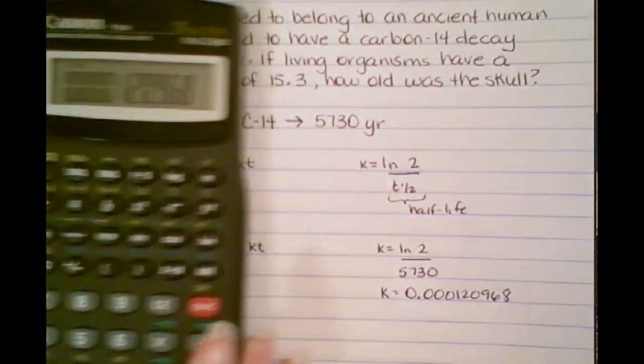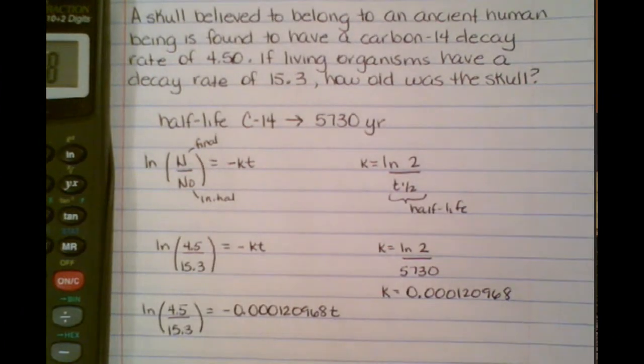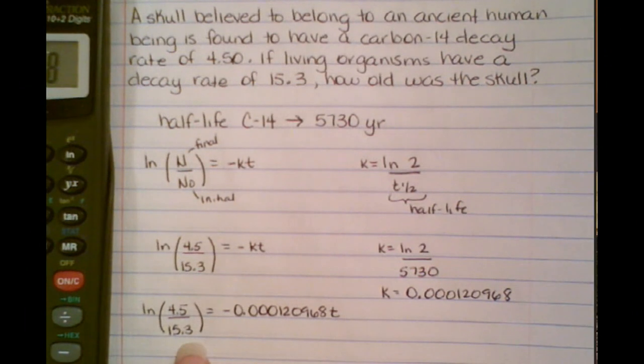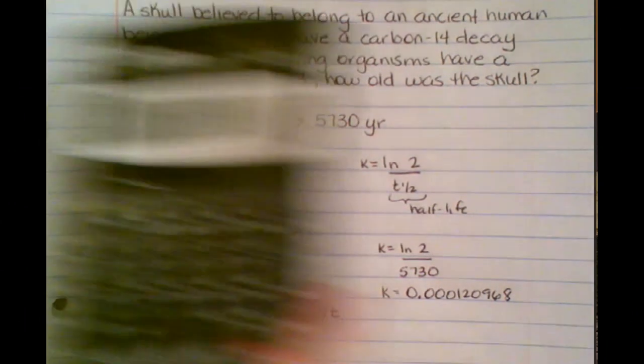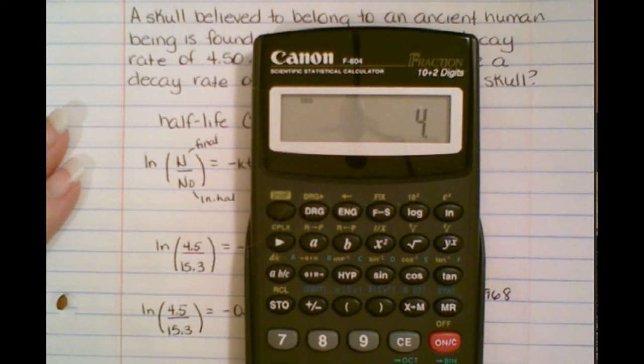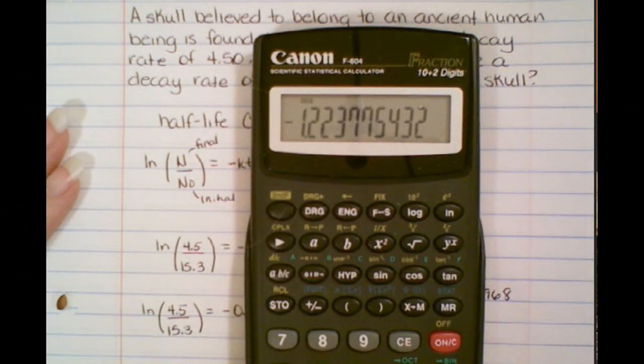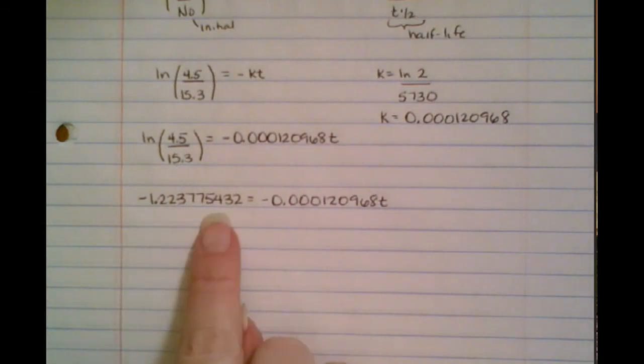So now I'm going to come back over here to my equation and plug that in. Now I have this formula right here, but I need to simplify the left-hand side of the equation. I'm going to take my calculator, enter 4.5 divided by 15.3 equals, and then I'm going to hit the natural log button and record that number.